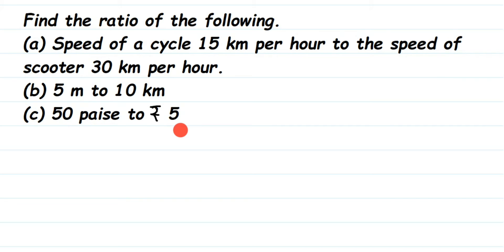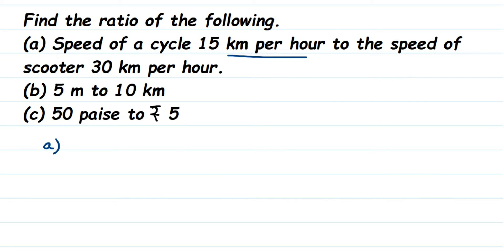In the first one, they are talking about the speed of a cycle and a scooter. The speed of the cycle is 15 kilometers per hour and of the scooter it is 30 kilometers per hour. Whenever you find a ratio, the units should be the same. Here the units are already the same, so we don't have to make any changes.